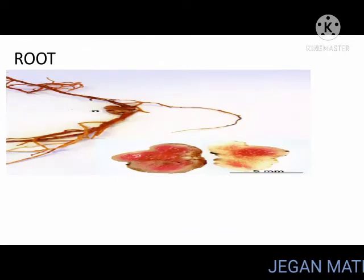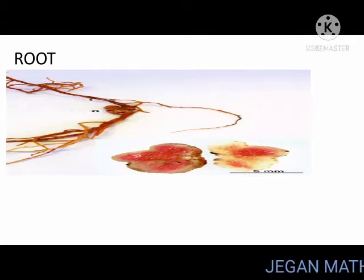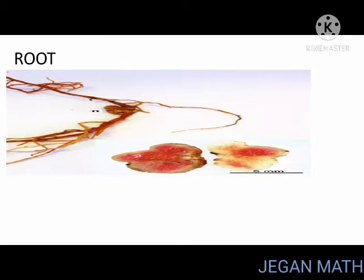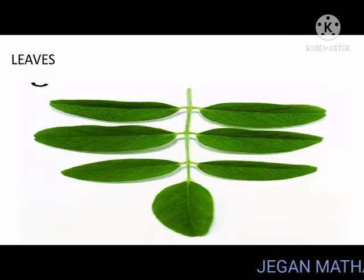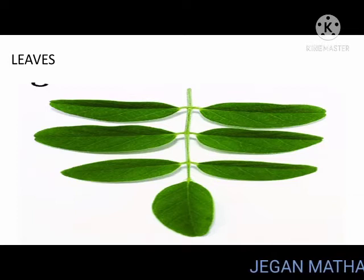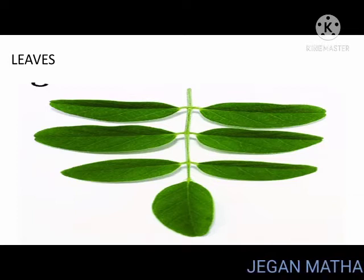Root: branched taproot system and it has nodules. Stem: aerial, weak stem and a twiner.